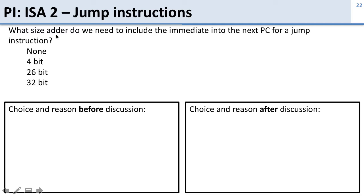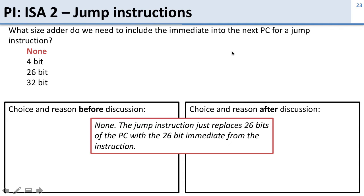Here's a question about what sort of adder we need to put into the data path if we're going to do a jump instruction. The answer is none, because with a jump instruction we just insert the bits of the PC. We don't need any special new type of addition — we're just replacing the bits we would have had anyway with new bits from the jump instruction.